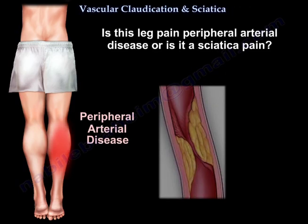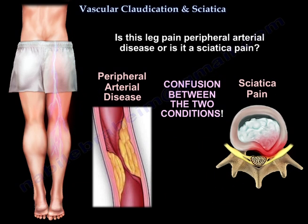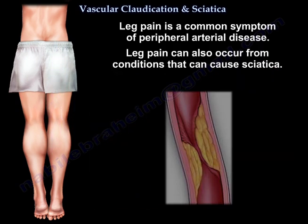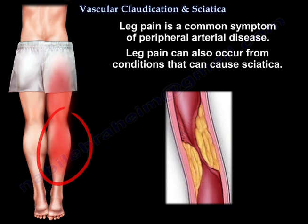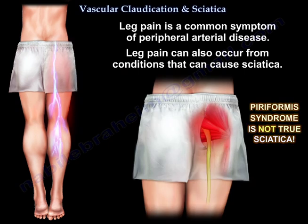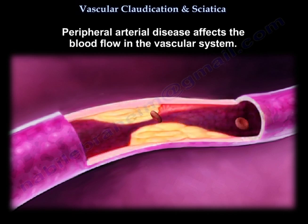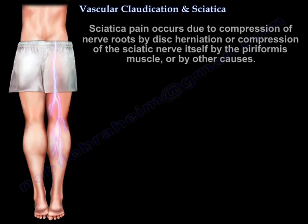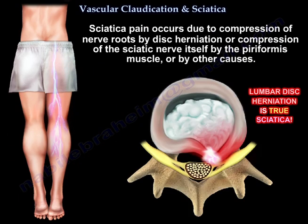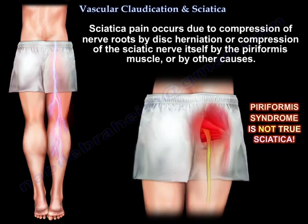Is this leg pain peripheral arterial disease or is it sciatica? There is often confusion between the two conditions. Leg pain is a common symptom of peripheral arterial disease, but it can also occur from conditions that cause sciatica. Peripheral arterial disease affects blood flow in the vascular system, while sciatica occurs due to compression of nerve roots by disc herniation, or compression of the sciatic nerve by the piriformis muscle or other causes.